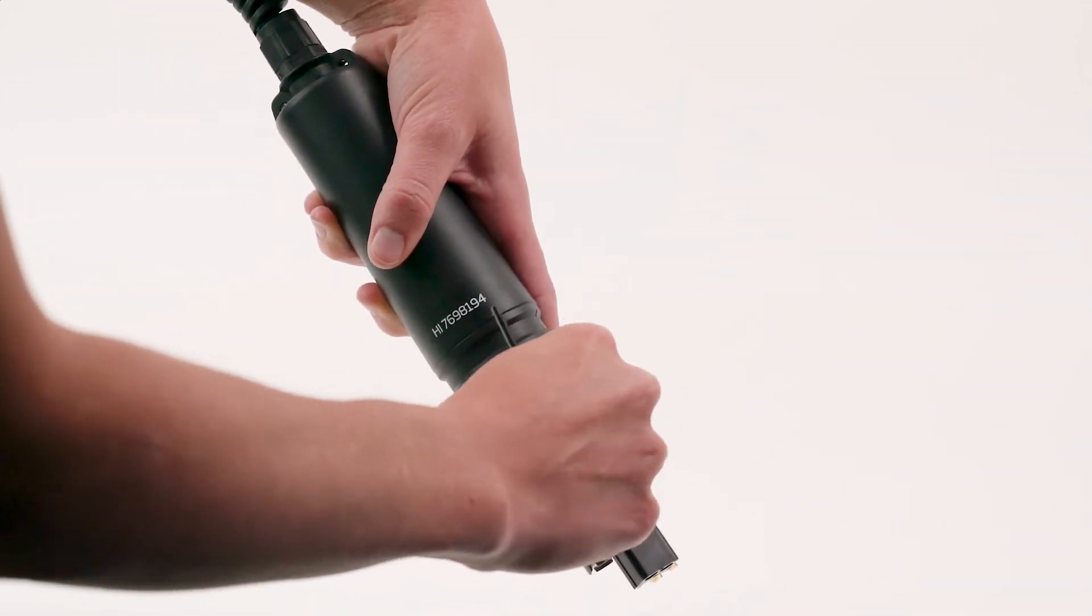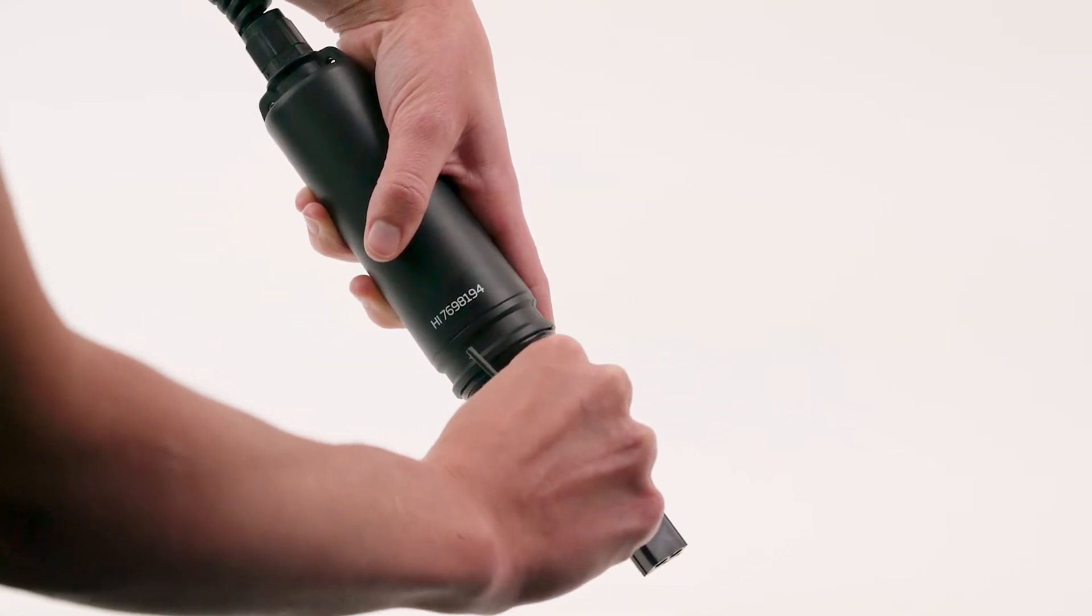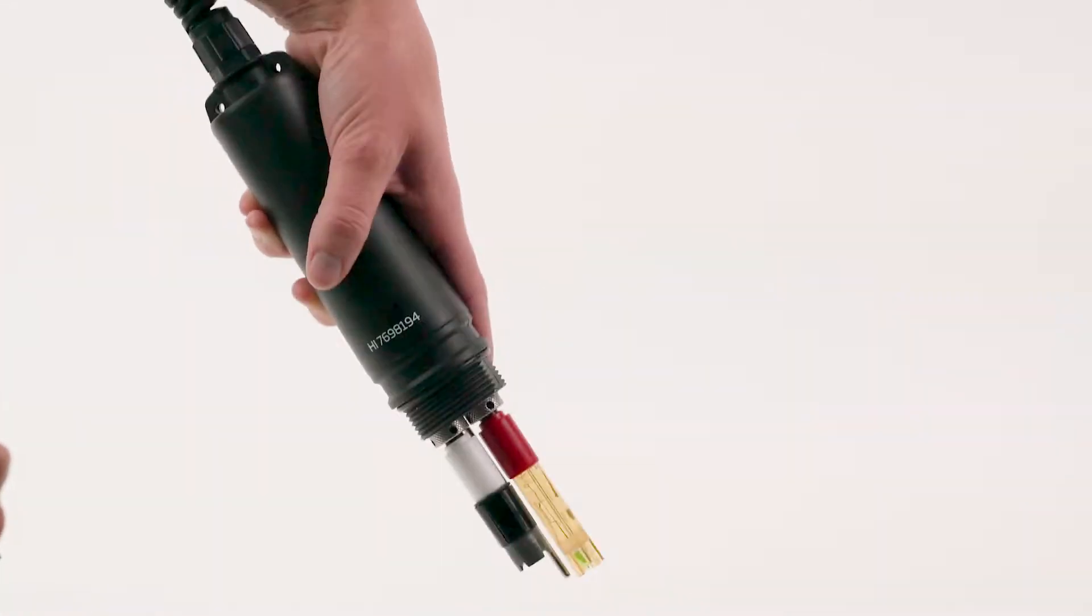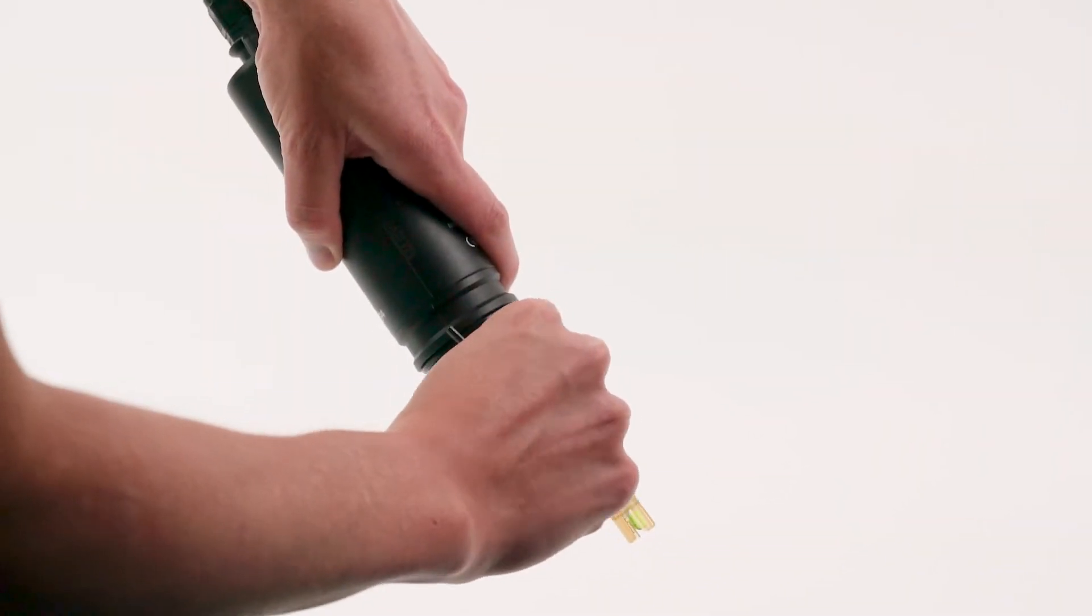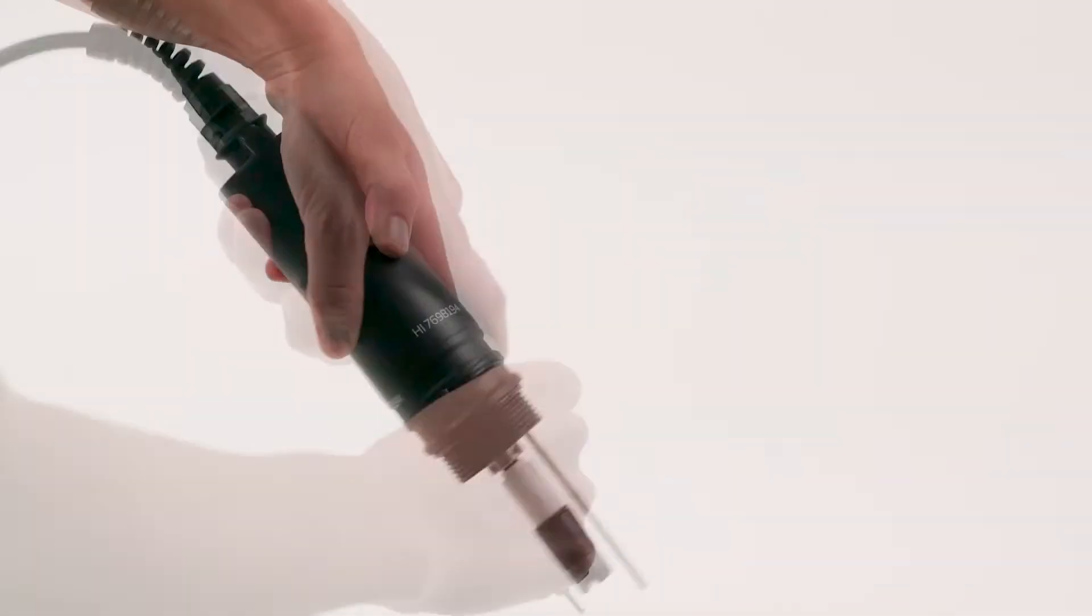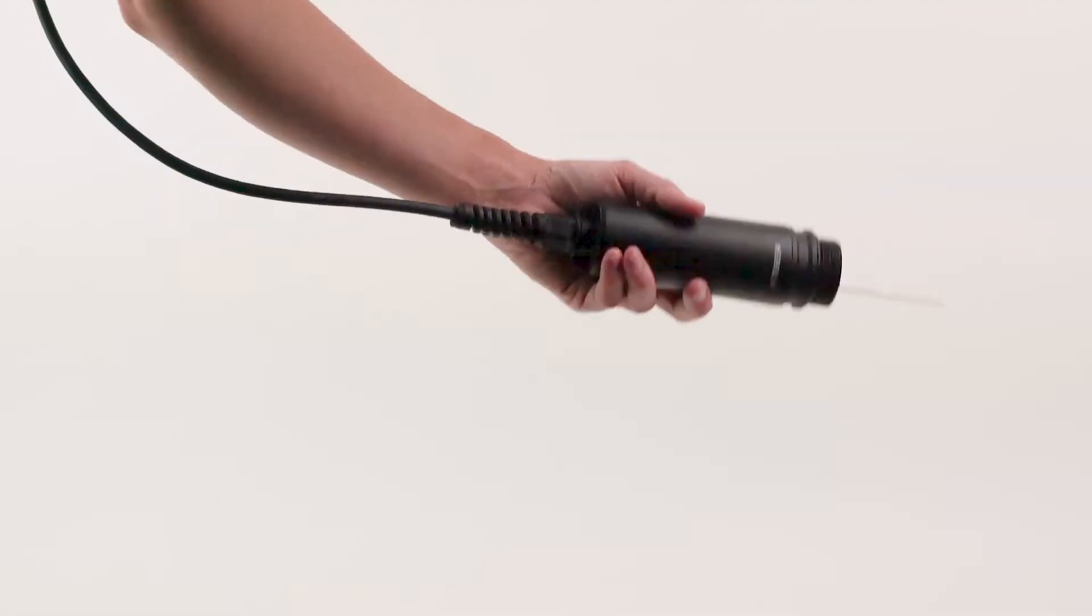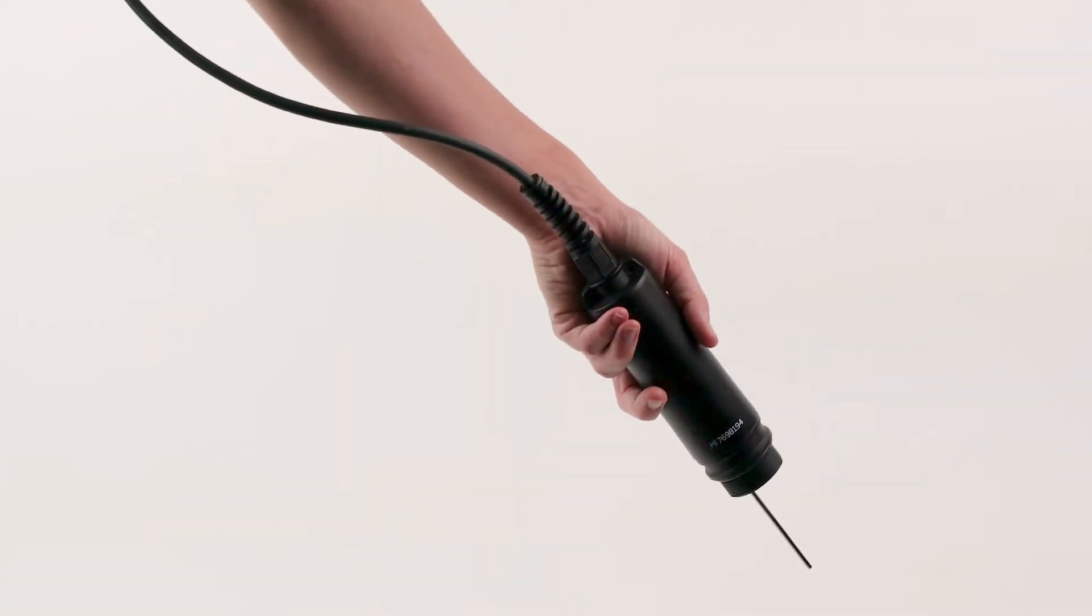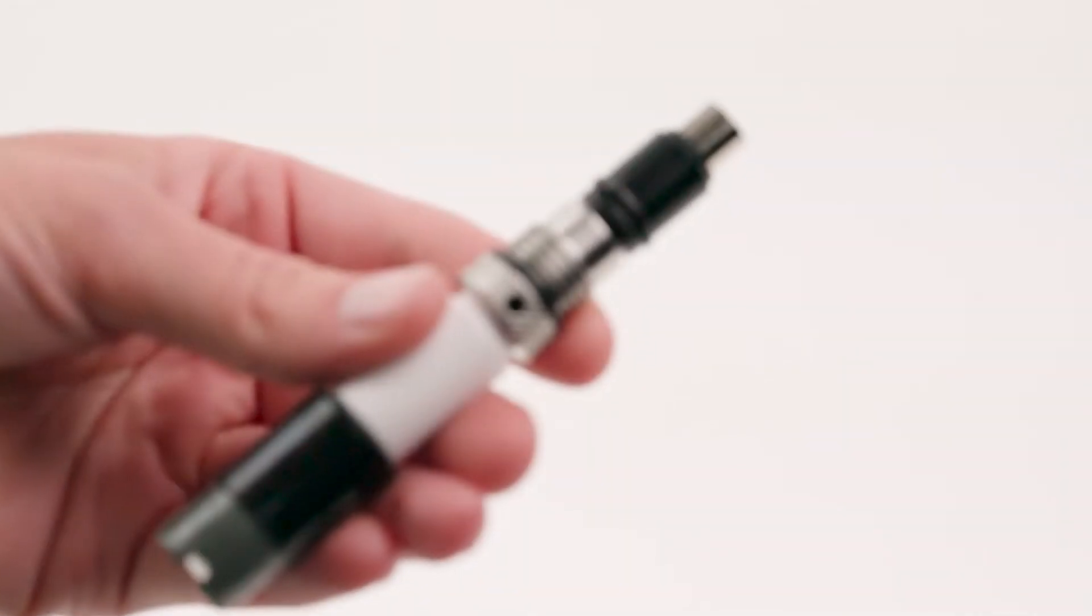Using the provided Allen wrench, remove each sensor, shaking the probe after each one is removed. Once all of the sensors have been removed, shake the probe one last time to get any excess moisture out of the casing.